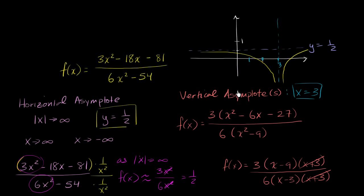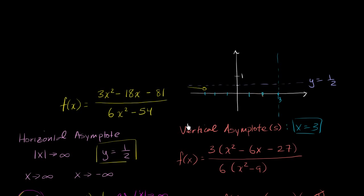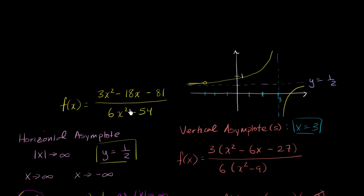The function is also not defined at x equals negative 3. So we'd have a point discontinuity there. The graph could look several different ways near that point — it's not defined at negative 3, and the curve approaches the asymptote at x equals 3. To determine the exact shape, you'd want to try out a few values. I encourage you, after this video, to try that and figure out what the actual graph looks like.